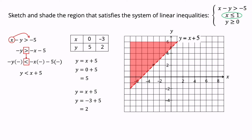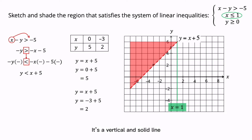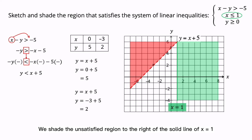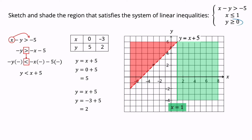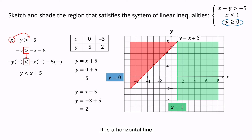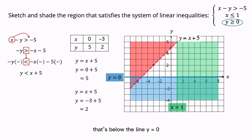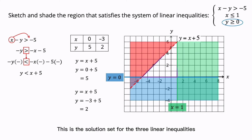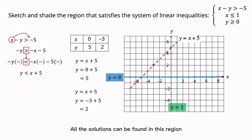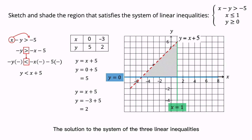For the inequality X less than or equals to 1, convert it to a linear equation X equals to 1 and draw the line. It is a vertical solid line — a solid line is included in the solution. Shade the unsatisfied region to the right of the solid line X equals to 1. For the inequality Y greater than or equals to 0, convert it to the linear equation Y equals to 0. It is a horizontal line — the X-axis. Draw a solid line on the X-axis and shade the unsatisfied region below the line Y equals to 0. The unshaded region is the solution set for the three linear inequalities.